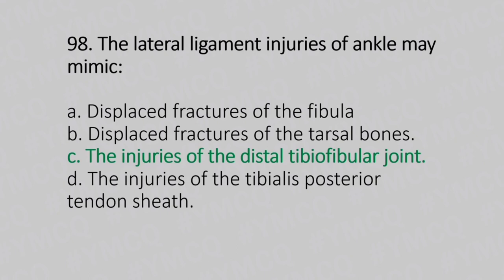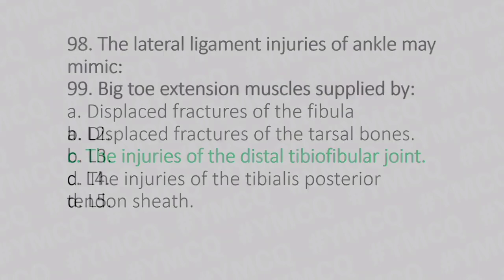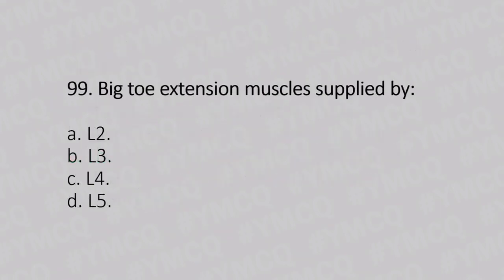Now let's move to question number 99. Big toe extension muscles supplied by. Option A: L2. Option B: L3. Option C: L4. Option D: L5. And the answer is Option D, L5.